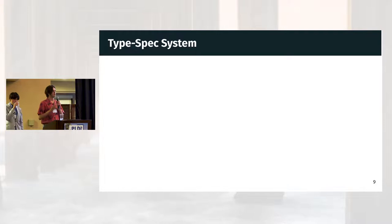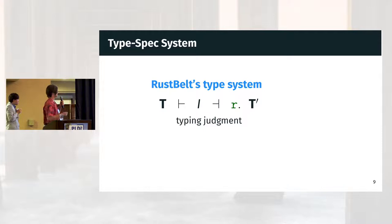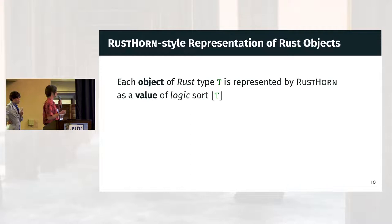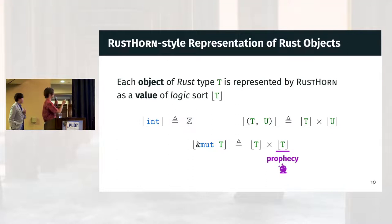In RustHornBelt, our objective is to formalize the kind of prophetic reasoning done in RustHorn, and to do it in a way that allows us to account for the presence of unsafe code. We do this by constructing what we call a type-spec system. We work from the type system of RustBelt, which takes an input type context T, some instruction I which produces a result R in a type context T prime, and we add a specification. These specifications are written as predicate transformers: we take a predicate over the output type context T prime and transform it into a predicate over the input type context T. These are the semantic values of the type context — the RustHorn-style representation. For integers, we use mathematical integers; for Rust pairs, mathematical pairs; and for mutable borrows, a pair of a current value and a prophecy.